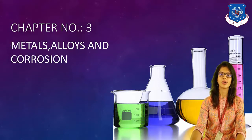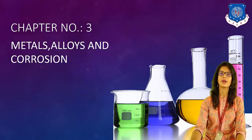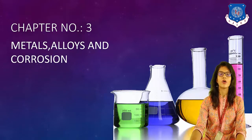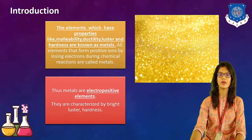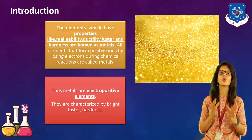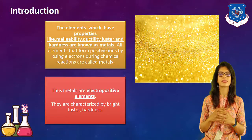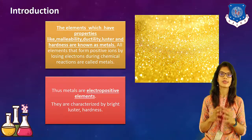In this particular chapter, we will take a look at what are metals, what are actually the properties of metals, what are the alloys, which are the types of alloys that can be present, and what is corrosion and how we can prevent the corrosion. So let's begin with chapter number 3, that is metals, alloys and corrosion.